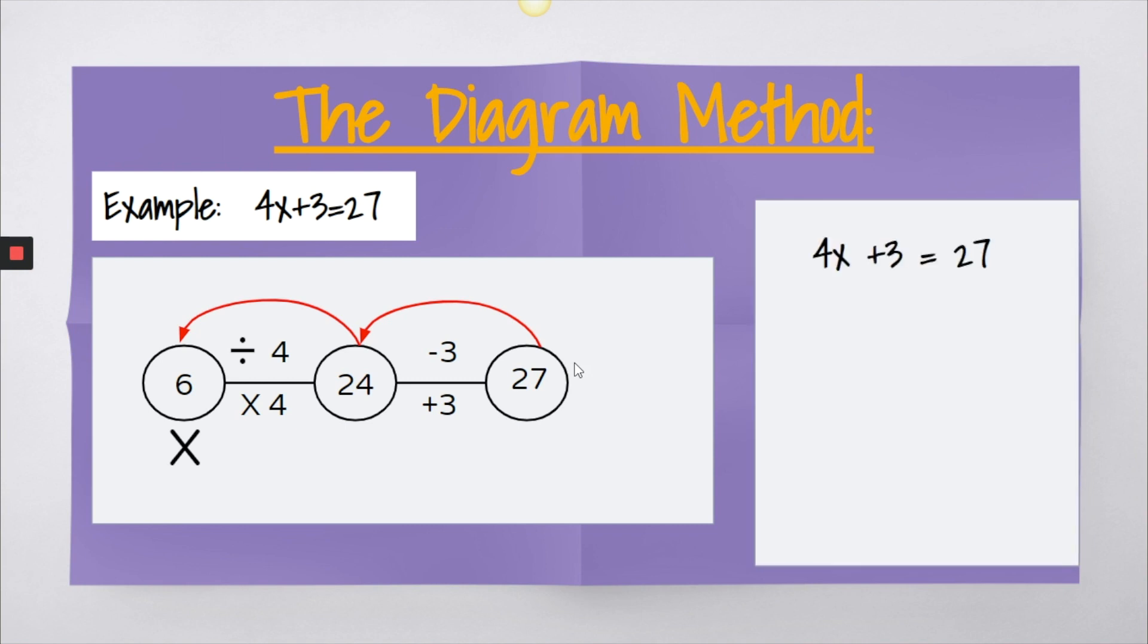And once again, what's great about this method is that they can then take that diagram and they can translate that into their algebraic equation. So the first step would be to subtract 3 from both sides. That will leave us with 4x equals 24. We see that 24 is both in the equation and in the diagram. Then our next step will be to divide both sides by 4. The 4s will cancel out, leaving us with x equals 6. Once again, they'll also see that 6 is both in the algebraic equation as well as our diagram.